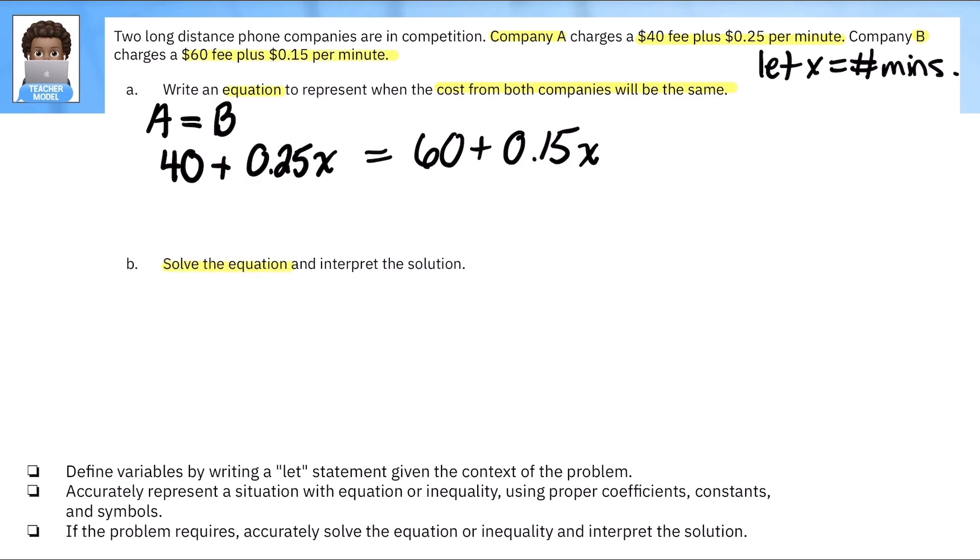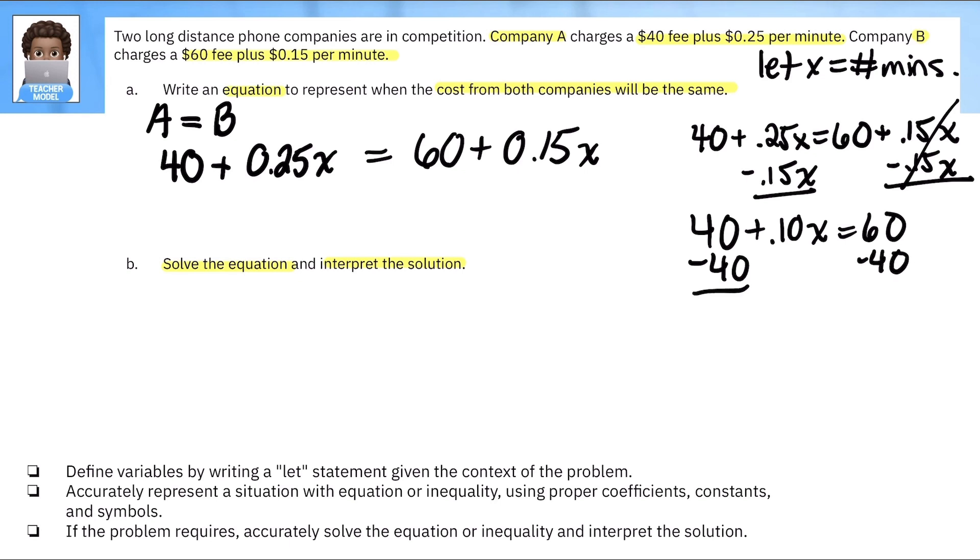Now our second part is solve the equation and interpret the solution. All right, so let's solve this. I'm going to move this to the side. I'm going to decide to move the 15X, 15 cents X. So now I have 40 plus 10 cents X is equal to 60. Now I have 10 cents X is equal to 20. And now I'm going to divide these by 10 cents.